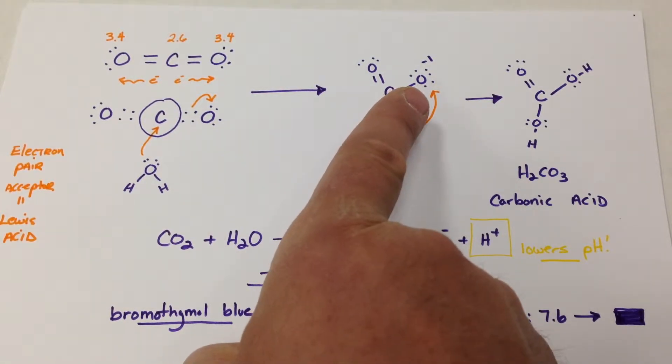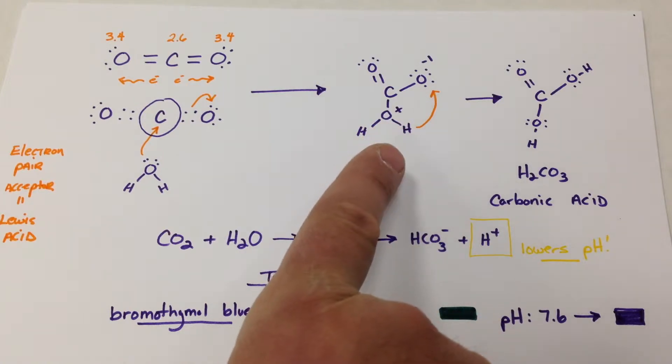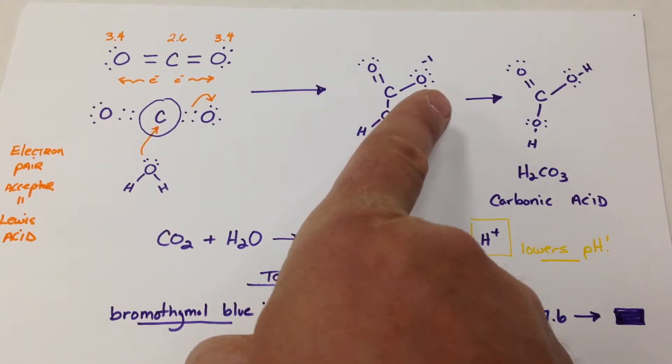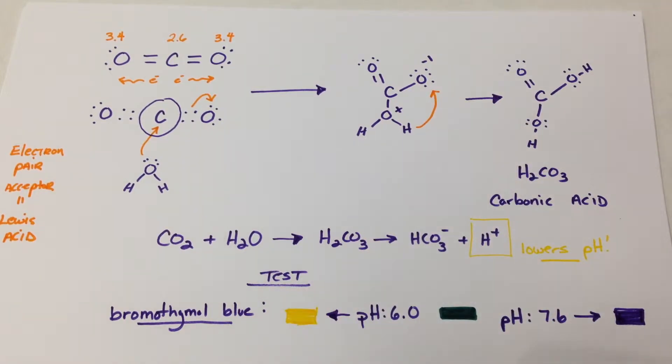And this formal charge here is negative because it had two electrons shared with carbon. Now it only has one pair. So that's why it's negative. And the last movement here is this positive H probably moves over to this negative, and it creates something called carbonic acid.